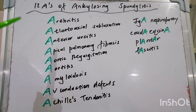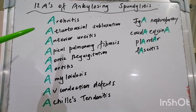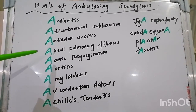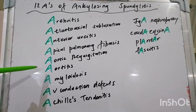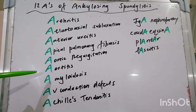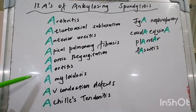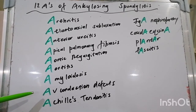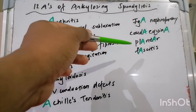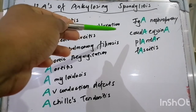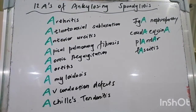The 12 A's: A stands for peripheral arthritis; it can also be atlantoaxial subluxation. A also stands for anterior uveitis, apical lung fibrosis, aortic regurgitation — that's because of involvement of the aortic root. We also have aortitis, which keeps company with AR; amyloidosis; AV conduction defects; Achilles tendinitis, which happens sometimes together with plantar fasciitis; cauda equina syndrome because of spinal cord compression; and IgA nephropathy.